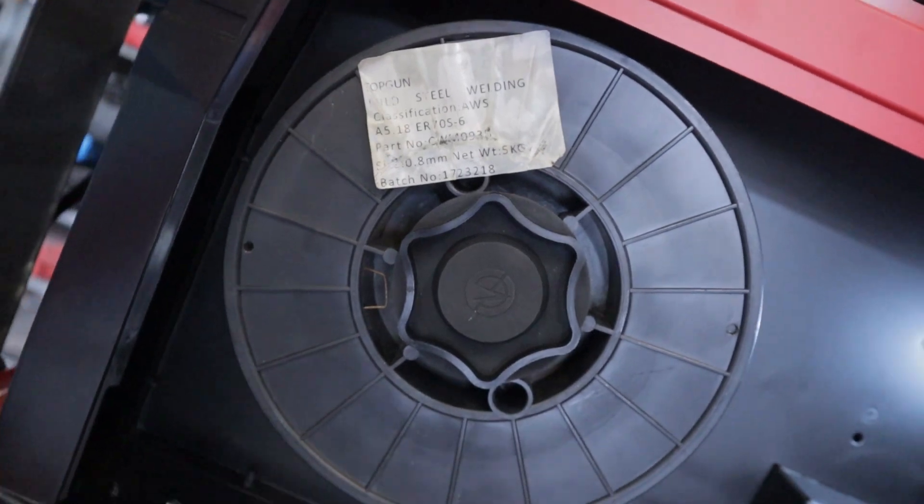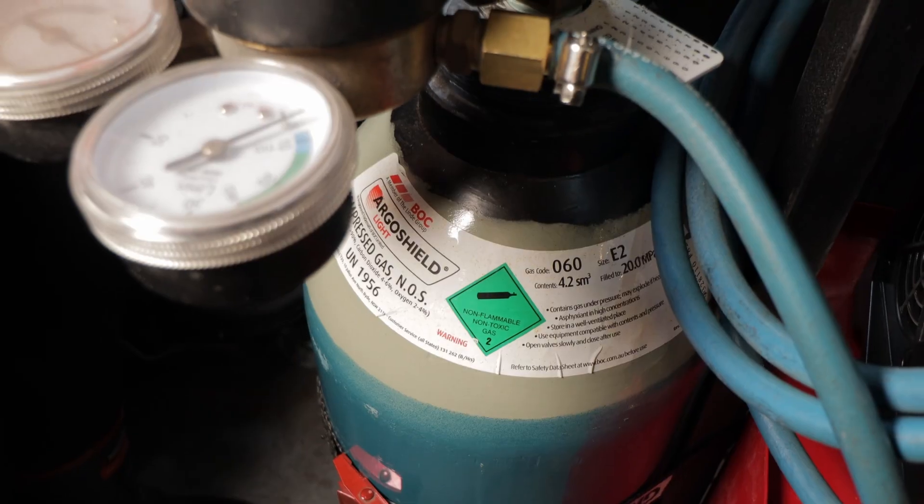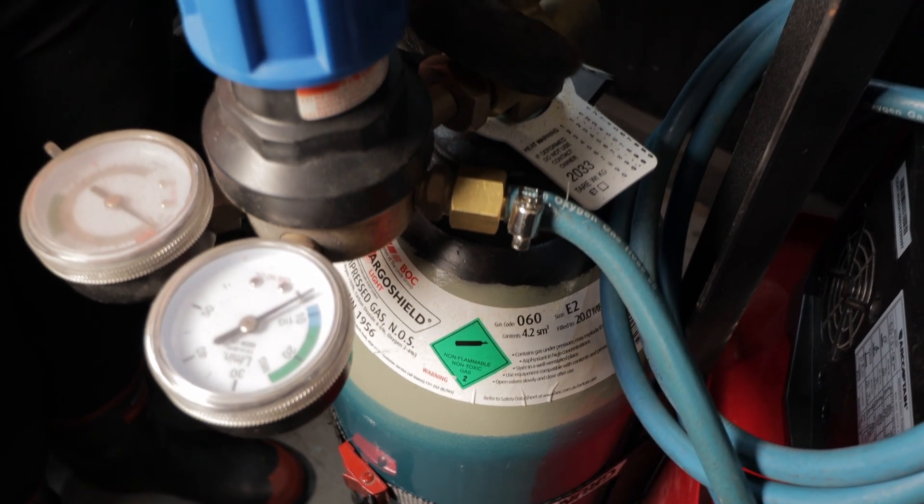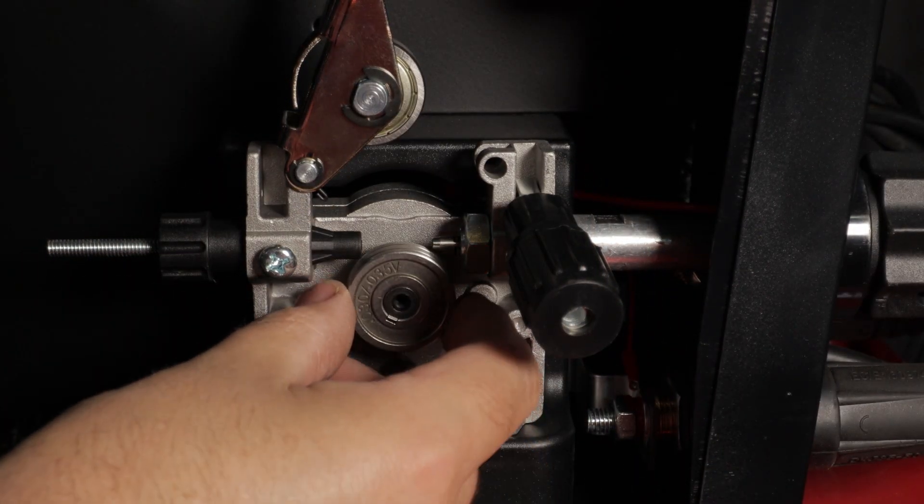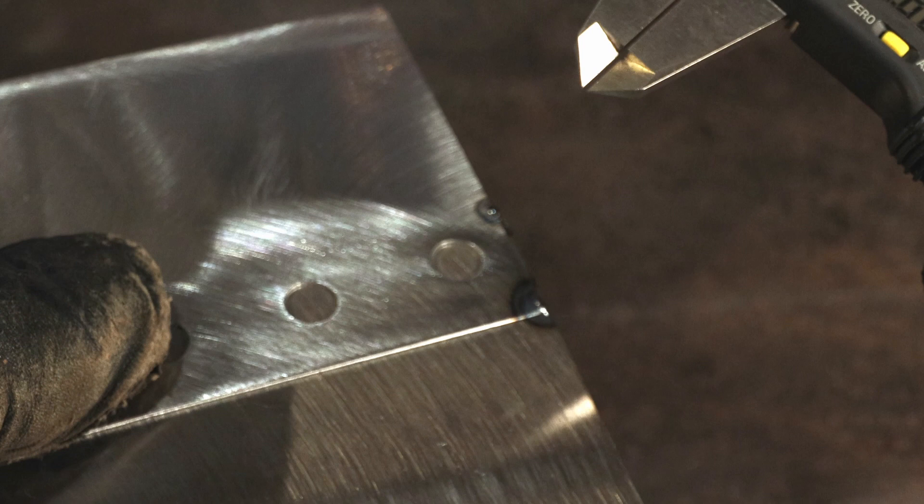For these examples I'm using 0.030 or 0.8, and for the gas I'm using ArgoShield light, similar gas to 75/25. I have the V roller in the drive unit.